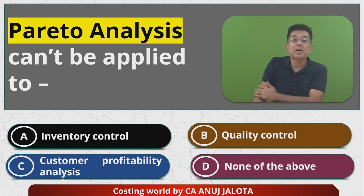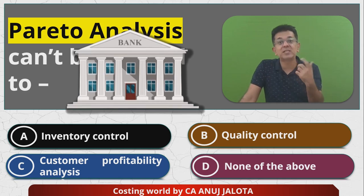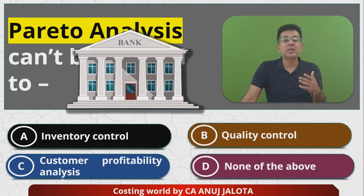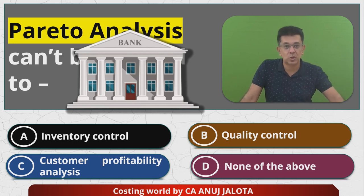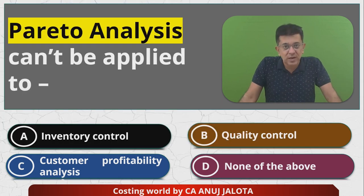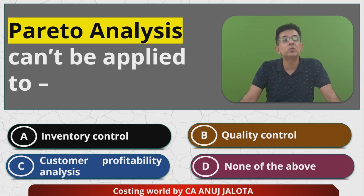Take the example of banks — for banks, the biggest inventory is their cash, so they need to protect it properly. There has to be a great amount of control over all such stocks. So option A cannot be the answer; in fact, Pareto analysis is best applied to inventory control.